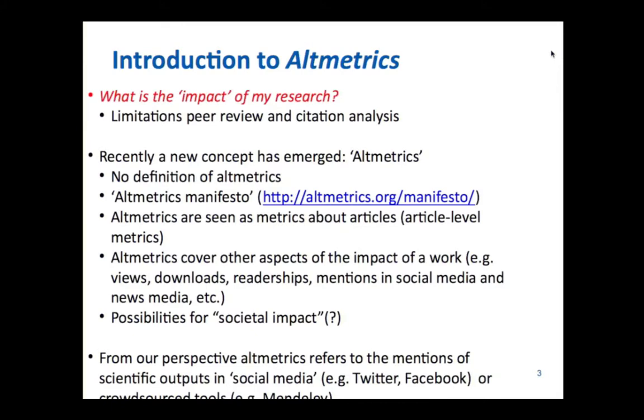To answer that question, we have counted on two main methodologies so far: peer review and citation analysis. The philosophy of altmetrics can be found in the so-called altmetrics manifesto. Altmetrics are often seen as article-level metrics, but citations and peer review evaluations can also be done at the article level, so that's not exclusive to altmetrics. Altmetrics cover other aspects of impact such as views, downloads, readerships, and mentions in social media and news media.